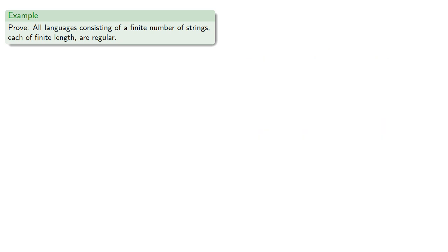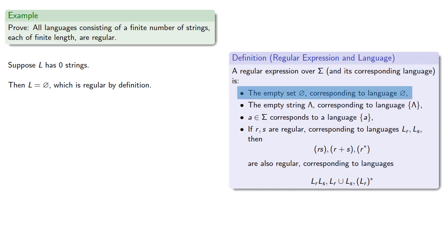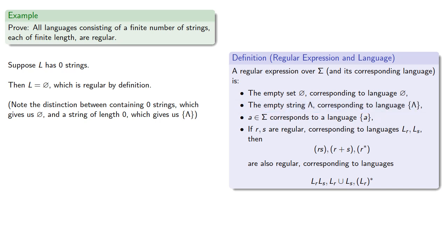We'll start with our base step. Suppose L has zero strings, so L is the empty language, which is regular by definition. Note the distinction between containing zero strings — which gives us the empty language — and a string of length zero, which is a language that does contain a string, namely the empty string.